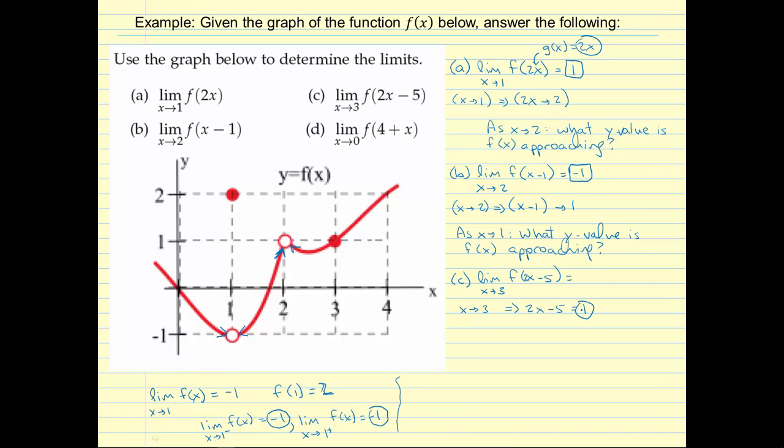So we're looking for the limit as x approaches 1. x approaches 1, x approaching 1 along the curve gives us a y value of negative 1 from both sides.